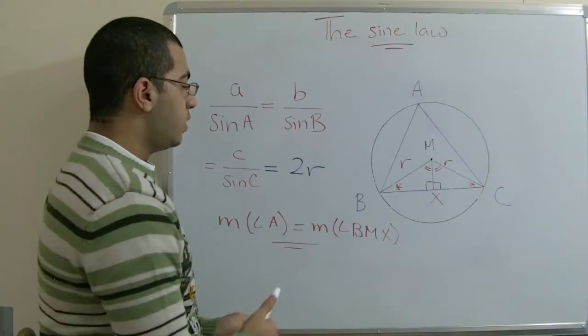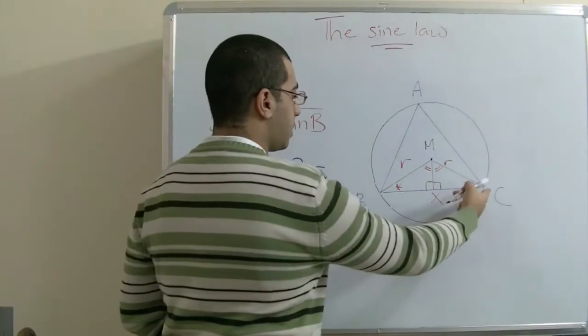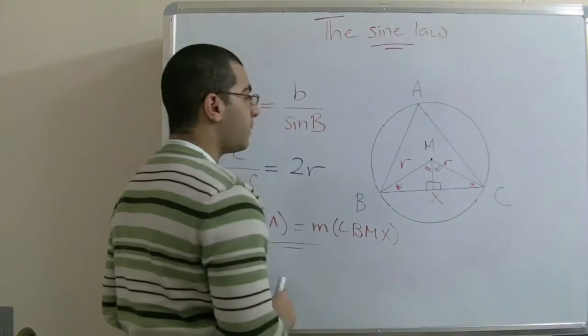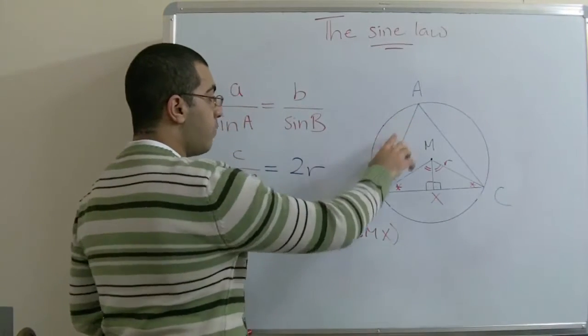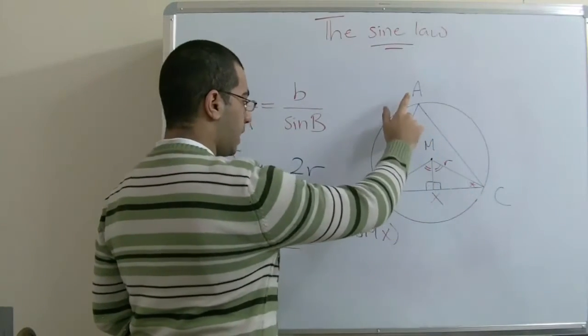We deduce from this that BX equals CX. And in our main triangle ABC,